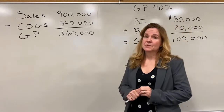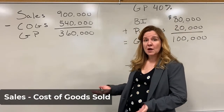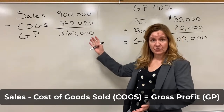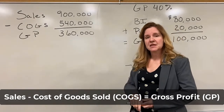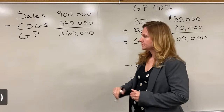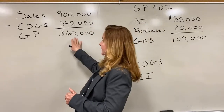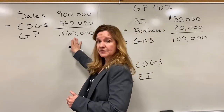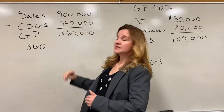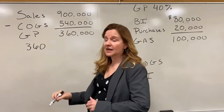First of all, we have to remember how gross profit is calculated. Gross profit is sales minus cost of goods sold. We're also going to calculate the gross profit percent, which is calculated by taking gross profit of $360,000 and dividing it by sales of $900,000.